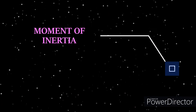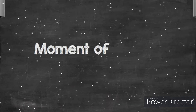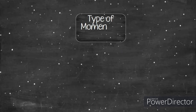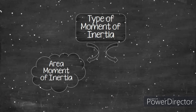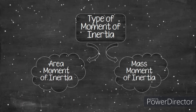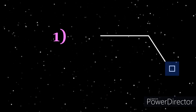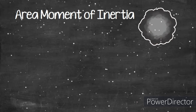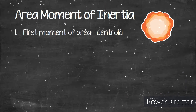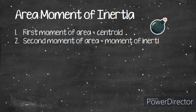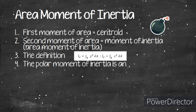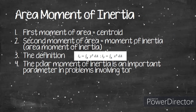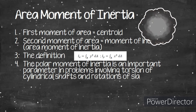The next subtopic is moment of inertia. There are two types: the first is area moment of inertia and the second is mass moment of inertia. For area moment of inertia, the first moment of area equals the centroid. The second moment of inertia is defined as Ix = ∫y² dA. This is an important parameter in problems involving torsion of cylindrical shafts and rotation of slabs.